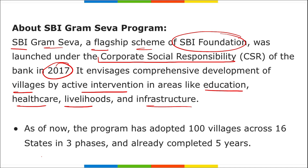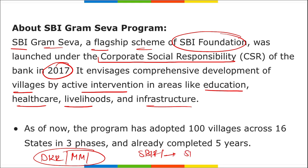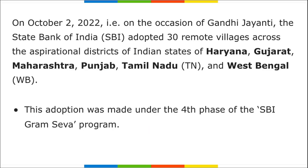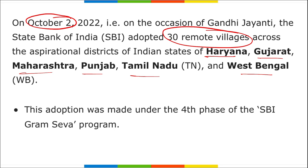SBI's current chairman is Dinesh Kumar Khara, headquartered in Mumbai, Maharashtra. For SBI Foundation, the MD & CEO is Sanjay Prakash, also headquartered in Mumbai. As of now, the program has adopted around 100 villages across 16 states in 3 phases. Key takeaway: Gram Seva launched on 2nd October with 30 remote villages adopted across 6 states.